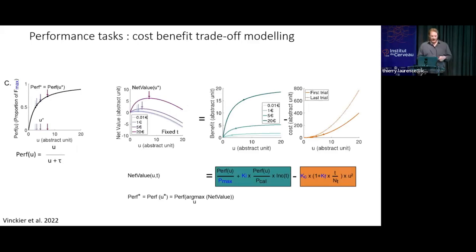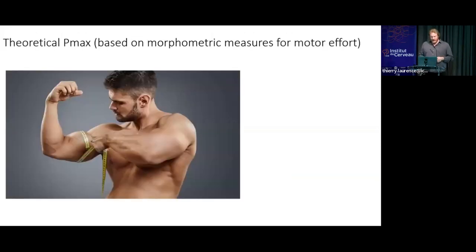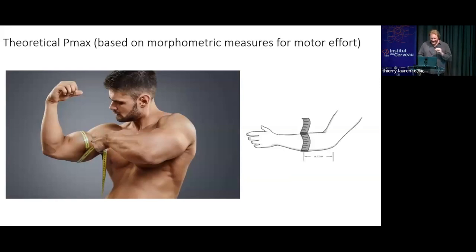You have three parameters defining the weight of reward, the weight of cost, and fatigue, plus a hidden parameter for the maximal performance reachable by the subject — for the physical version, the theoretical maximal force if you contract all fibers — informed by a morphometric measure of the subject such as muscle size. Obviously you cannot do that for the cognitive version, so it's a flat prior, but you can do this for the physical one.